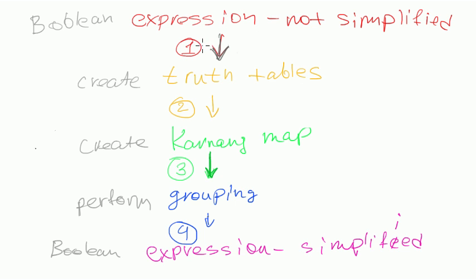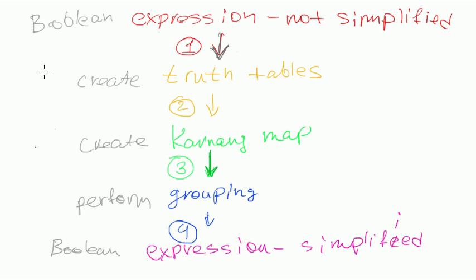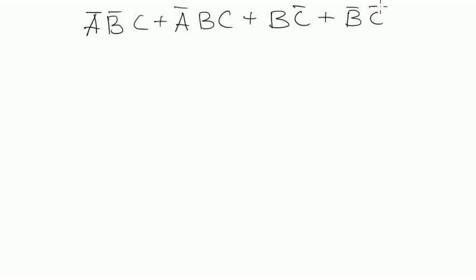So we'll start with simplifying, with turning an expression that we want to simplify into a truth table. And the expression will be the following: A negated B negated C plus A negated B C plus B C negated plus B negated C negated.